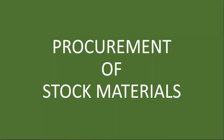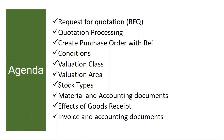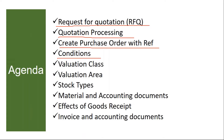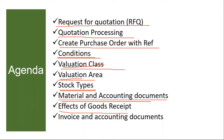The topics we are going to cover: we will see request for quotation, how to create a request for quotation in the system, how quotation processing happens, how to create the purchase order with reference to your quotation, then conditions, valuation class, valuation area, stock types, and material and accounting documents. Then we will see the effects of goods receipt — how it is done and what happens. Finally, invoice and accounting documents — how invoicing is done and how accounting documents get generated.